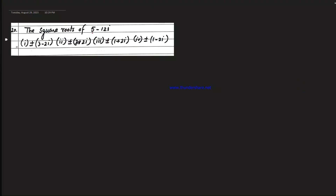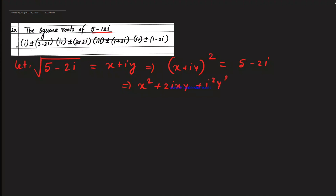Next: find the square root of (5 - 2i). Let √(5 - 2i) = x + iy. Then squaring: (x + iy)² = 5 - 2i, giving x² - y² + i(2xy) = 5 - 2i. So this means x² - y² = 5 and 2xy = -2.